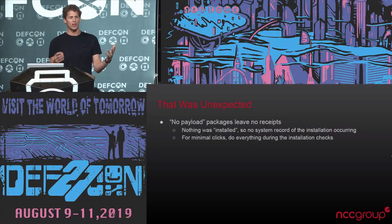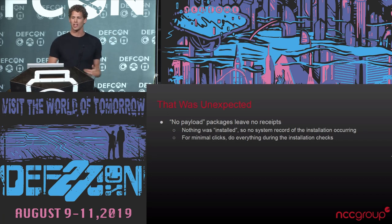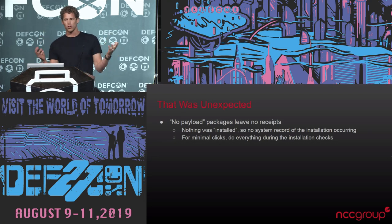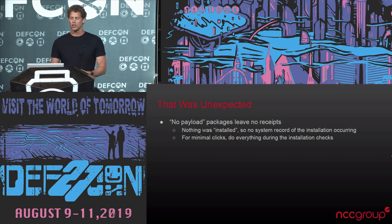In my final minute, I wanted to make some notes about what we just observed. There were some unexpected things that happen when you do a no-payload package like the one I just created. When you install anything with a payload, the installer creates a receipt, and you can look at your system for all the packages that have been installed by that identifier using Package Util. However, if no files are installed because there's no payload, there's no receipt that that package installer ever ran — so there's no appropriate system record you can audit to see that this ran.